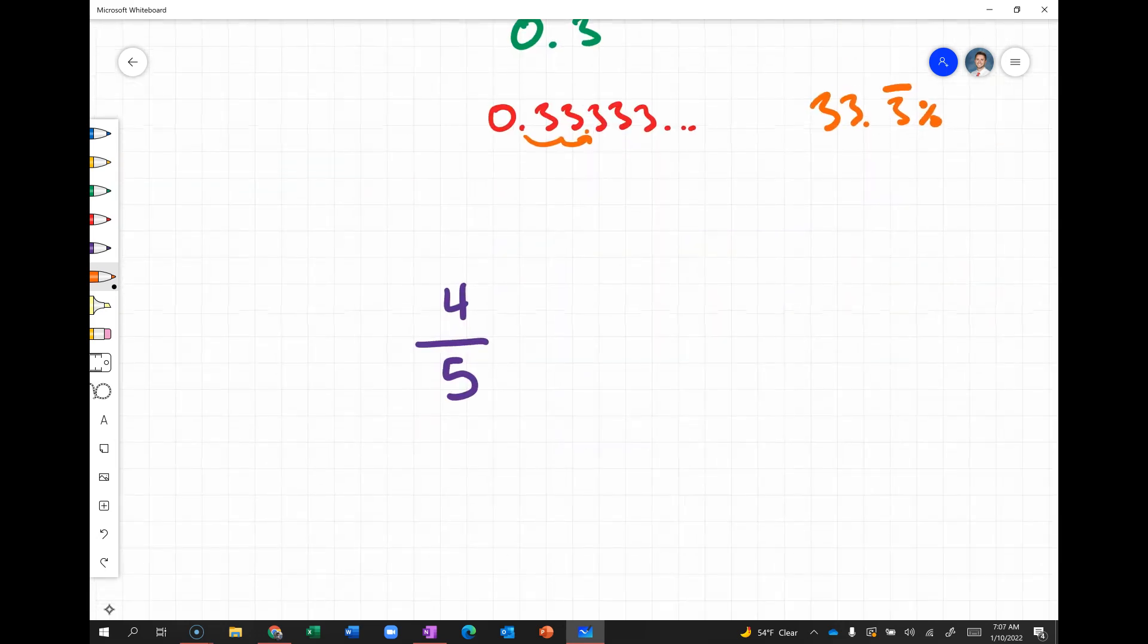Okay, what about going from a fraction to a percent? So, two basic ways to do this. Percent means out of 100. So, if we want to write four-fifths as a percent, then we need to get this as a fraction out of 100. So, one way to do that, if you have a nice, easy denominator, then you can just multiply to get an equivalent fraction that has a denominator of 100. For example, four-fifths, that's a nice, easy number to multiply by 20 and get 80 one-hundredths. So, if it's 80 out of 100, then we know that's 80%.